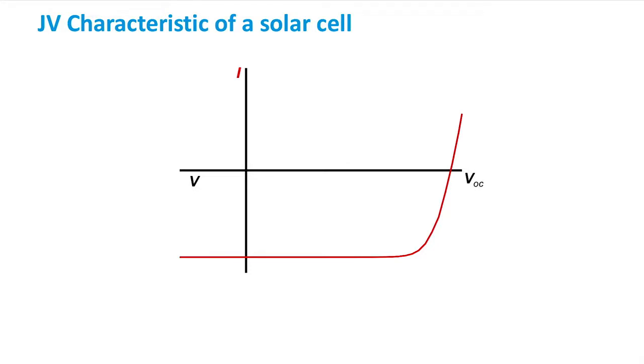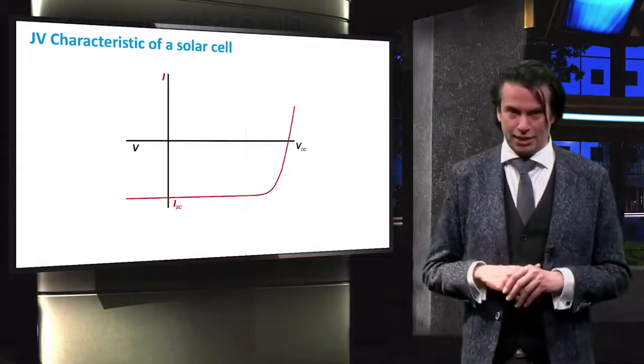Similarly, we can see the crossing of the curve along the y-axis. This point is equivalent to short-circuiting the solar cell as the voltage on either electrode of the solar cell is equal. As such, we call this the short-circuit current, or ISC.